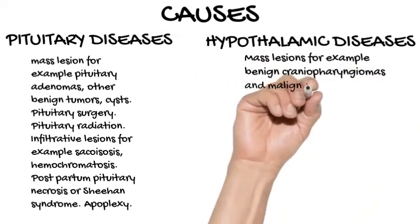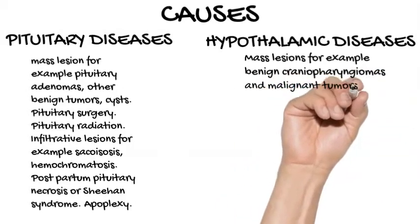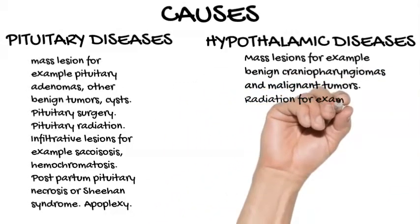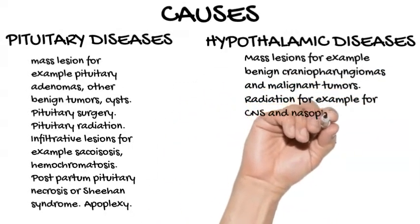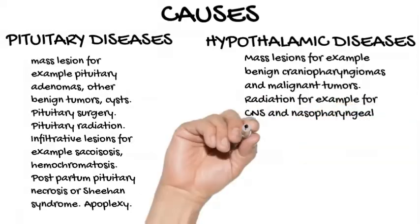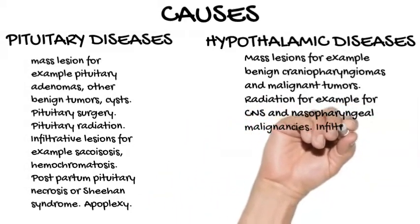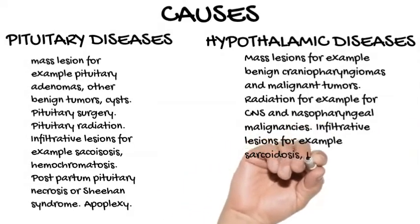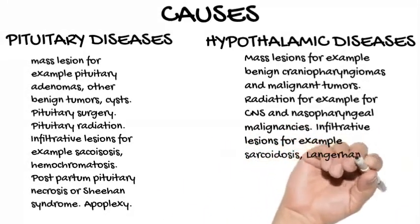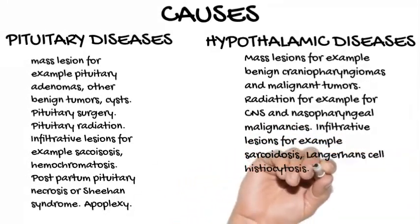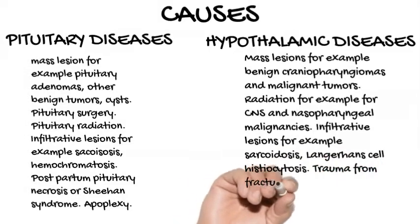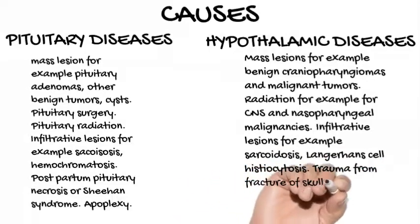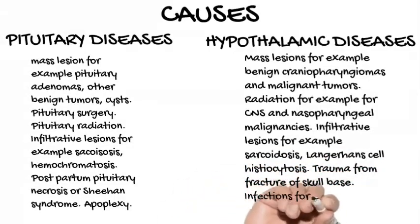Hypothalamic diseases include mass lesions such as benign craniopharyngiomas and malignant tumors; radiation for CNS and nasopharyngeal malignancies; infiltrative lesions such as sarcoidosis and Langerhans cell histiocytosis; trauma from fracture of the skull base; and infections such as tuberculous meningitis.